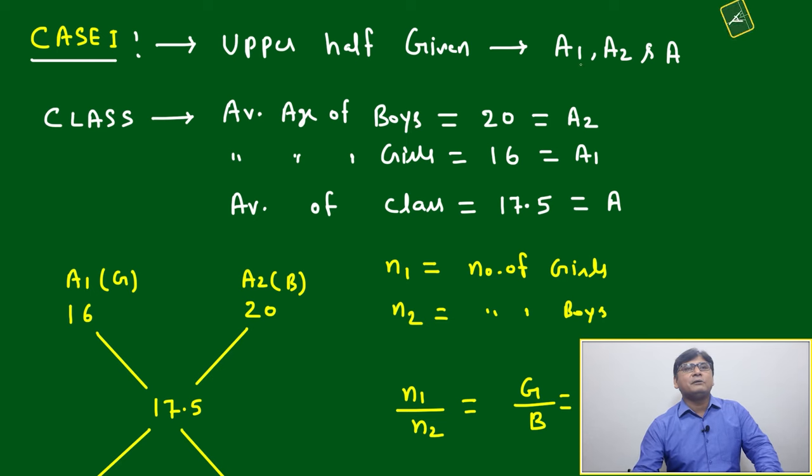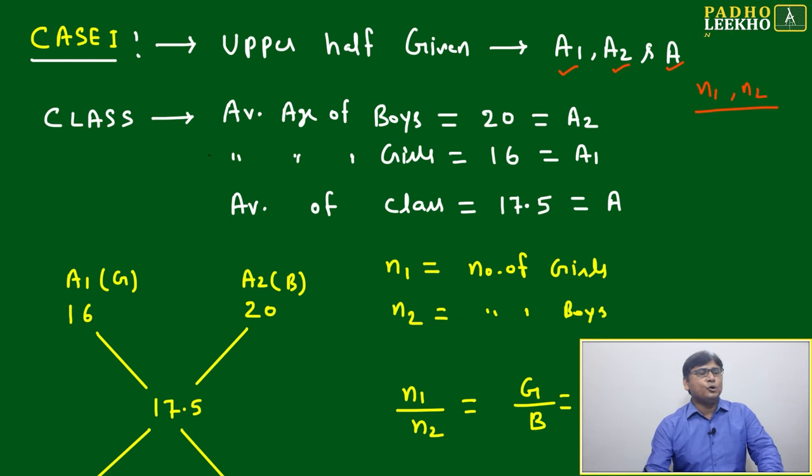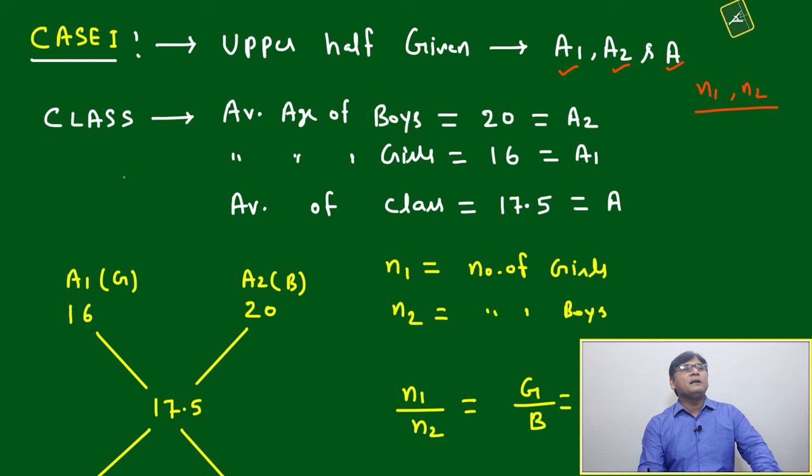Case 1: when upper half has given, means a1, a2, and a has given, then we have to find relation between n1 and n2. We will look at one example because based on the example understanding will be easy.